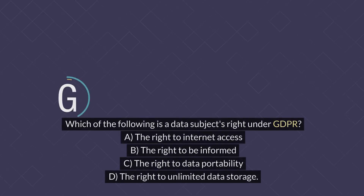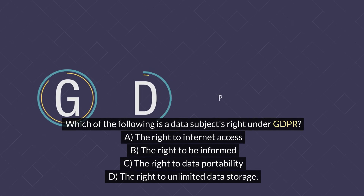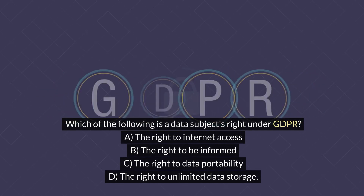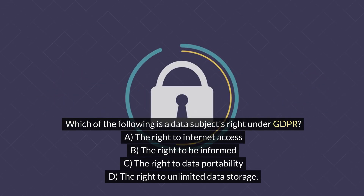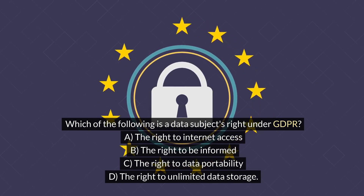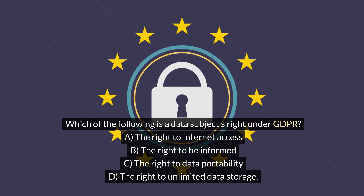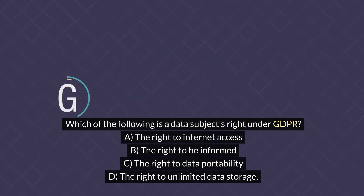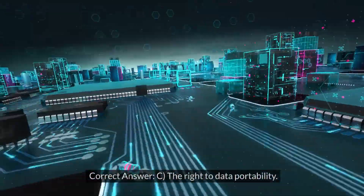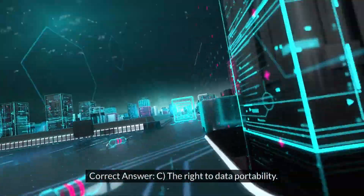Which of the following is a data subject's right under GDPR? A. The right to internet access. B. The right to be informed. C. The right to data portability. D. The right to unlimited data storage. Correct answer: C. The right to data portability.